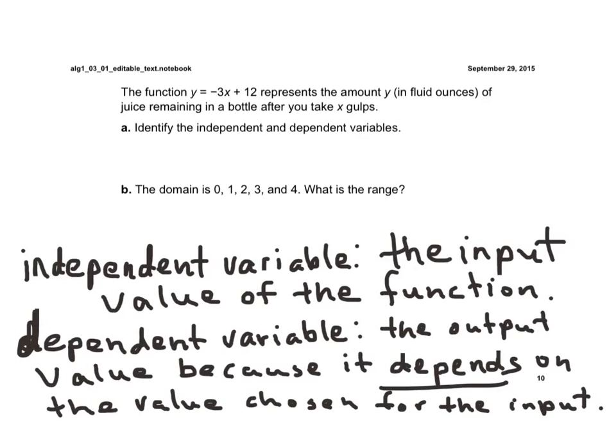Alright, so now, the function y equals negative 3x plus 12 represents the amount y in fluid ounces of juice remaining in a bottle after you take x gulps. Identify the independent and dependent variables.